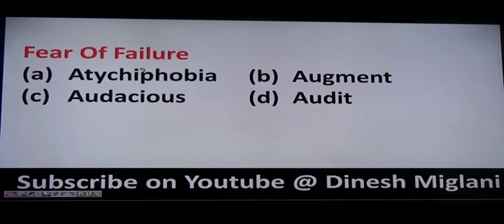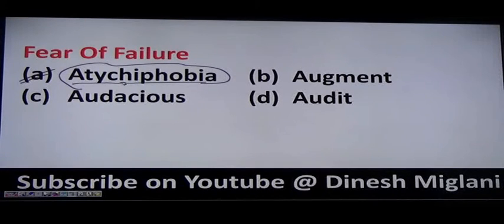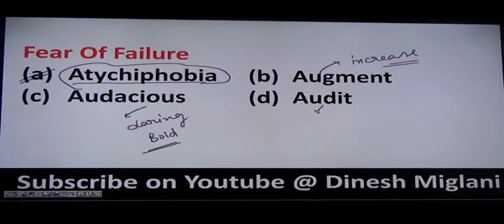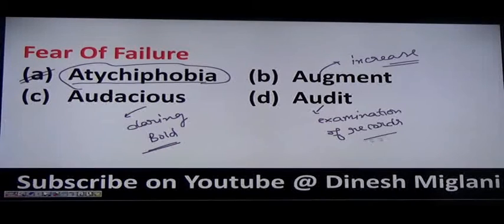Fear of failure is called atychiphobia. Augment (A-U-G-M-E-N-T) means to increase. Audacious means one who is very daring or bold. Audit means examination of records. Fear of failure is atychiphobia, augment means to increase, audacious means daring and bold, and audit means examination of records.